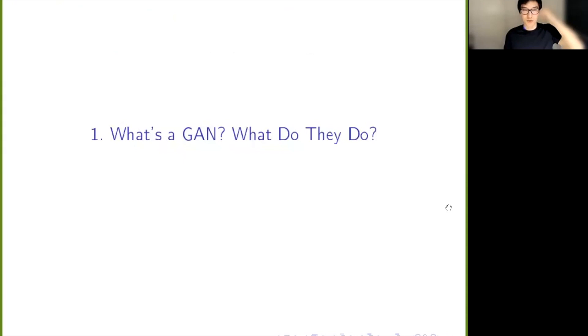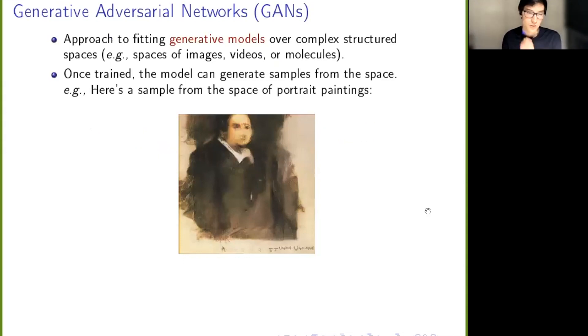First of all, I'm going to tell you what a GAN is and what they do. GAN is short for Generative Adversarial Network. What they do is they are an approach to fitting a so-called generative model over a complex structured space. What that means is it's a black box, if you like, that you push a button on and then out comes a sample from one of these spaces. Complex doesn't mean complex numbers here, it means complex in the sense that it's a very complex object with lots of complexities. For example, images are complex, videos are complex, molecules are complex.